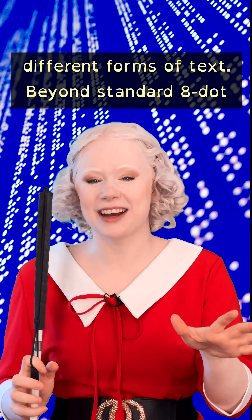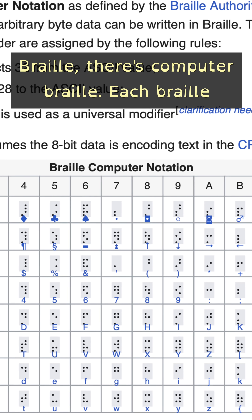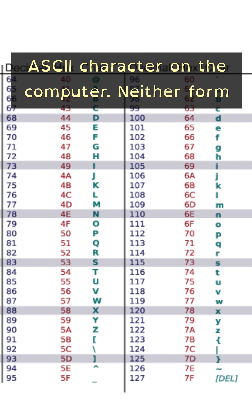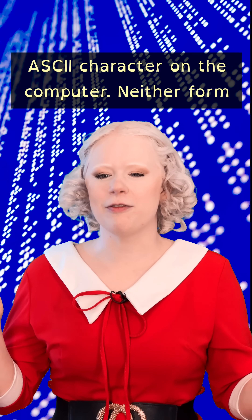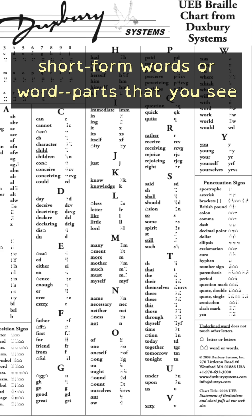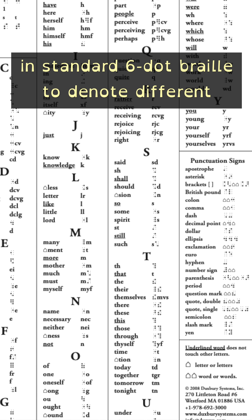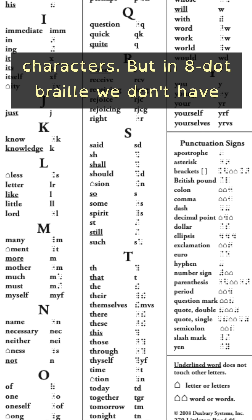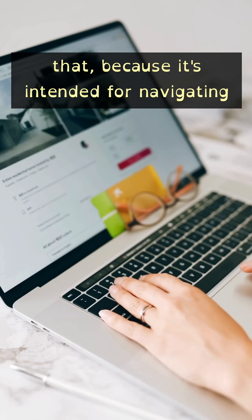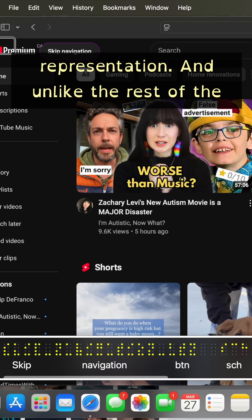Beyond standard eight-dot Braille, there's computer Braille, where each Braille character is a direct representation of an ASCII character on the computer. Neither form of eight-dot Braille uses any contractions — which are short-form words or word parts seen in standard six-dot Braille — because it's intended for navigating digital environments and we need a one-to-one representation.